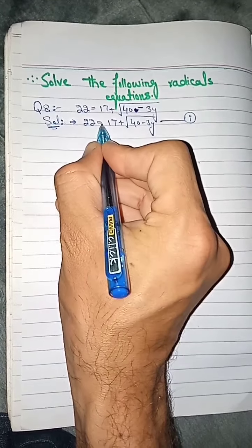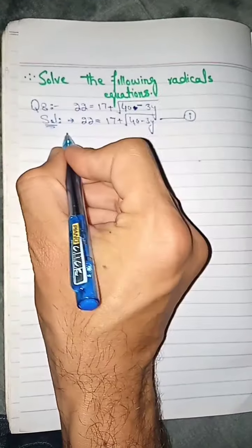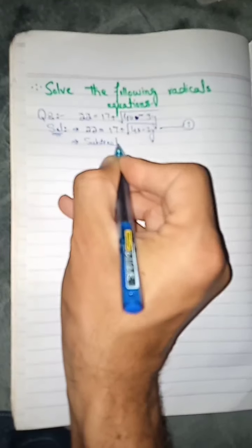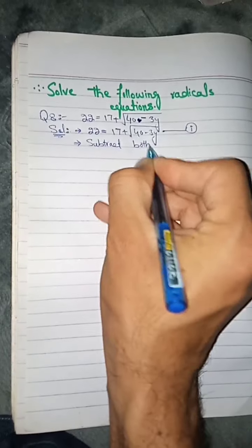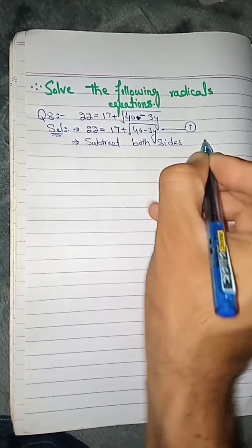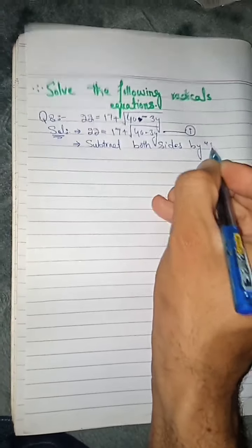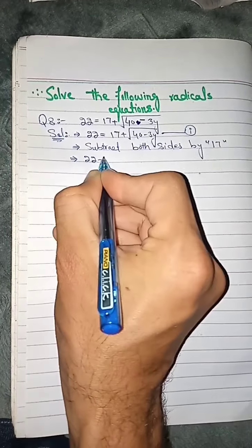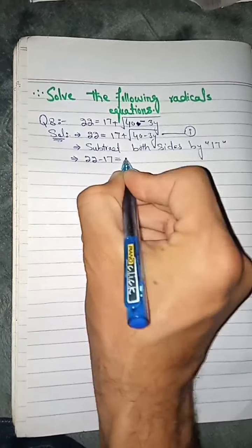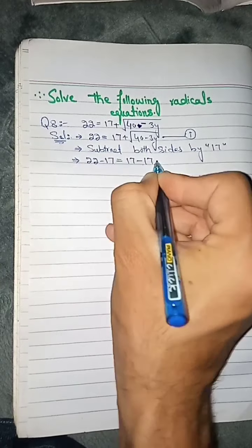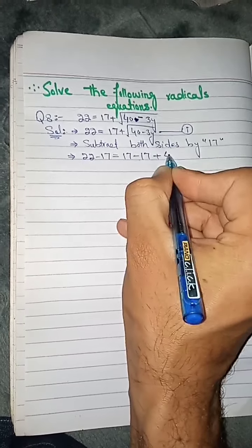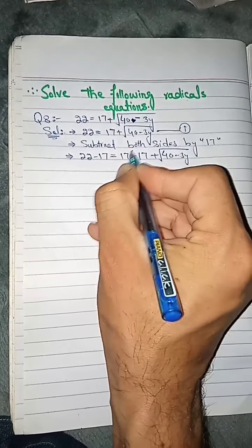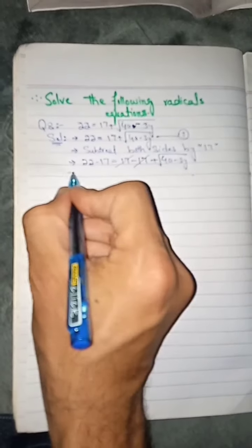We subtract 17 from both sides. On the left side: 22 minus 17. On the right side: 17 minus 17, which cancels out, leaving just the square root of (40 minus 3y).